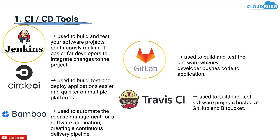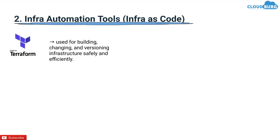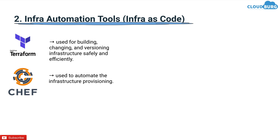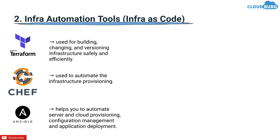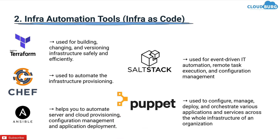The next category is infra automation tools, and we have Terraform, which is used for building, changing and versioning infrastructure safely and efficiently. Chef is used to automate infra provisioning. Ansible helps you automate server and cloud provisioning, configuration management and application deployment. SaltStack is used for event-driven IT automation, remote task execution and configuration management. Puppet is used to configure, manage, deploy and orchestrate various applications and services across the whole infrastructure of the organization. The top demanding infra automation tools are Terraform and Ansible.